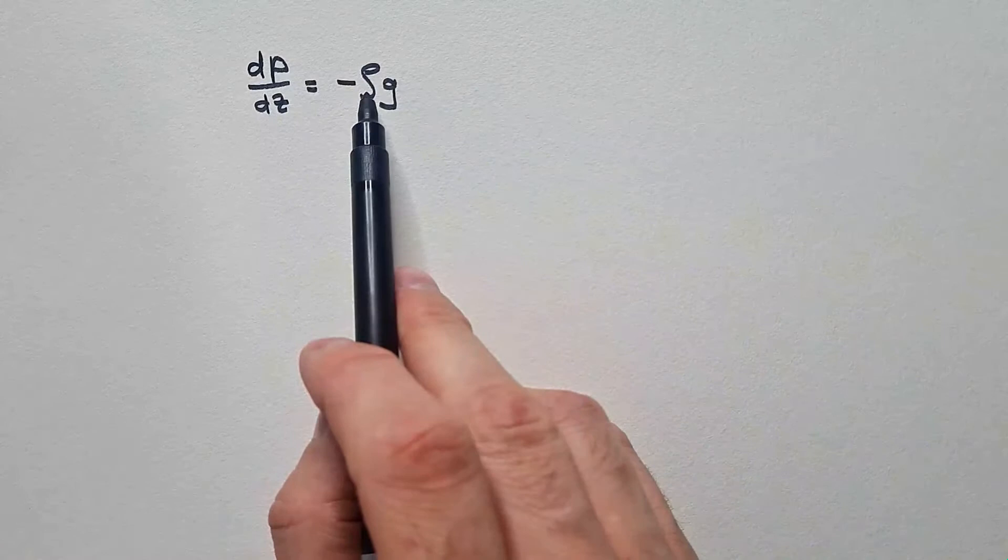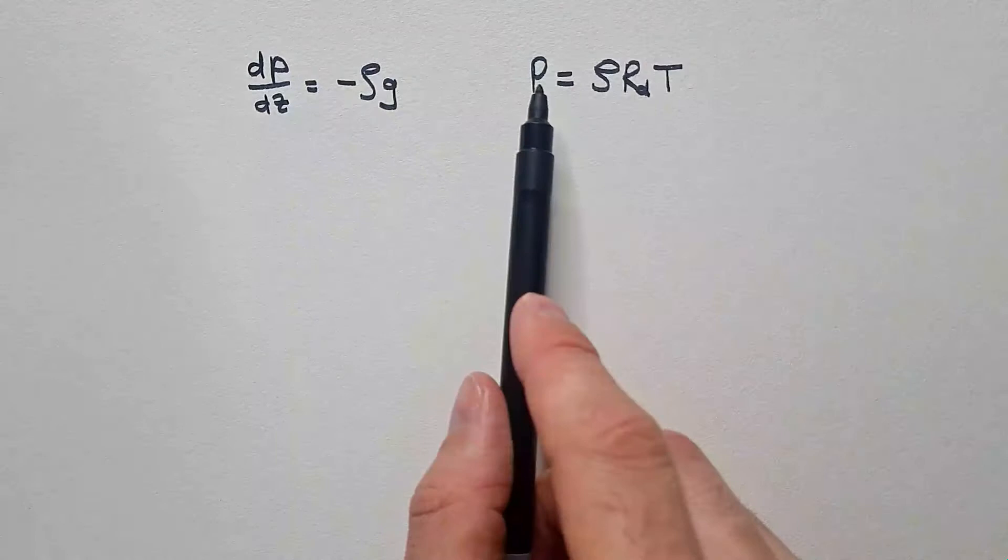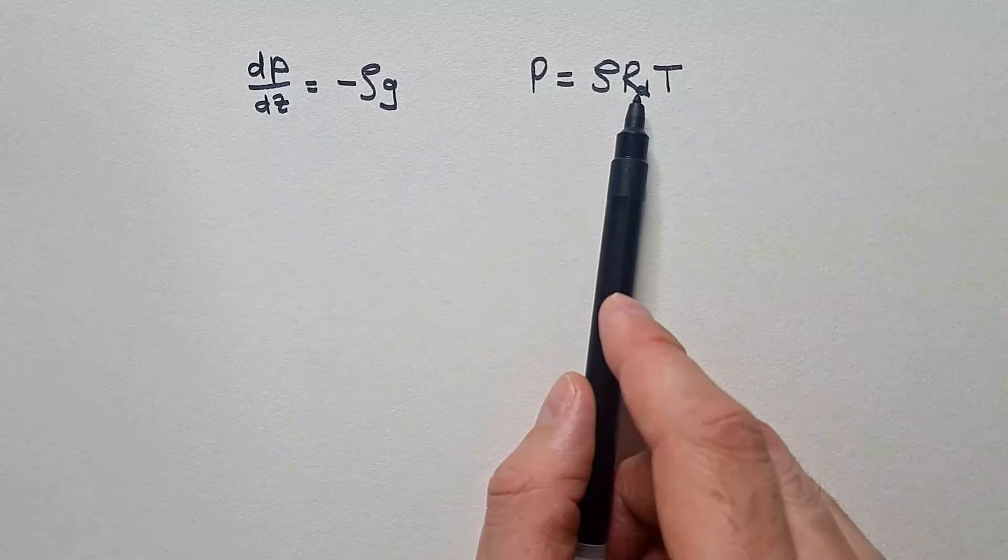As I said many times now, in atmospheric sciences we don't like to use density, so we use equation of state, where P is pressure, T is temperature in Kelvins, and Rd is gas constant of dry air. So here we make assumption that air is dry.